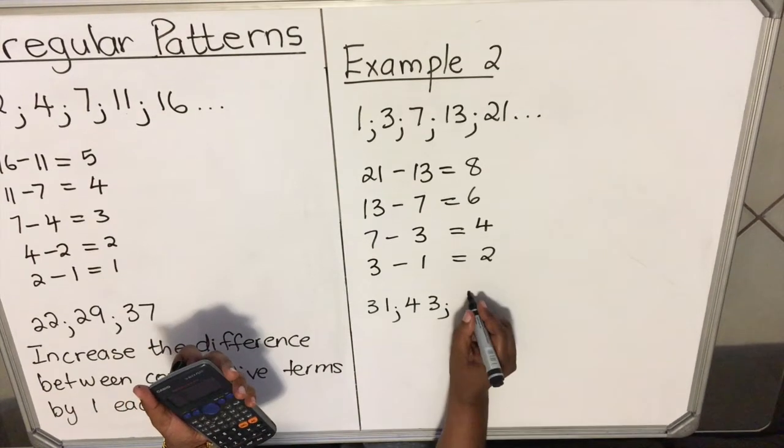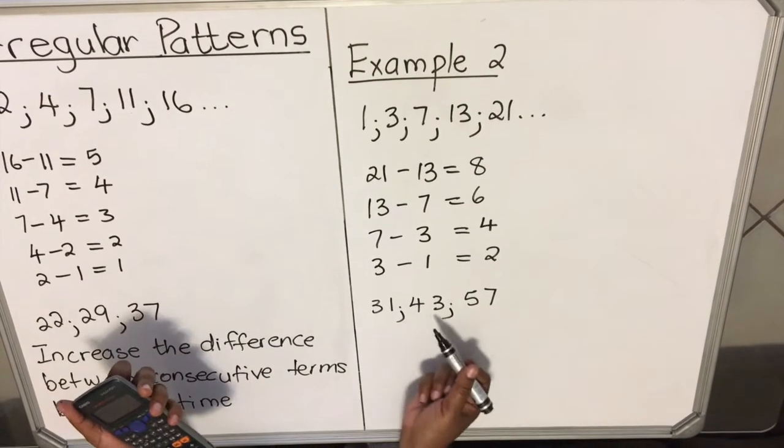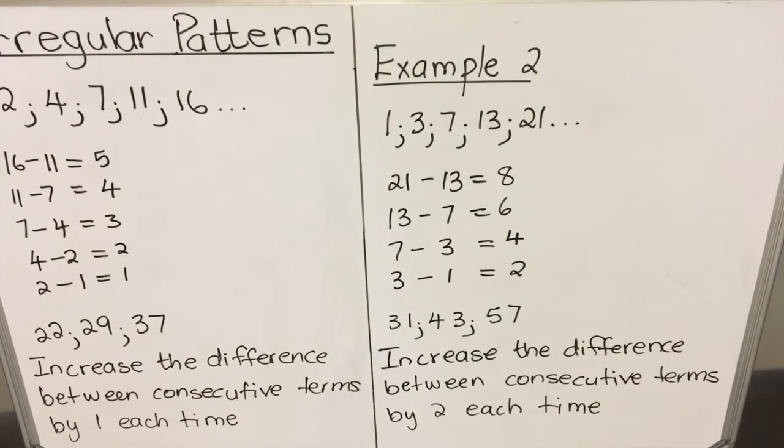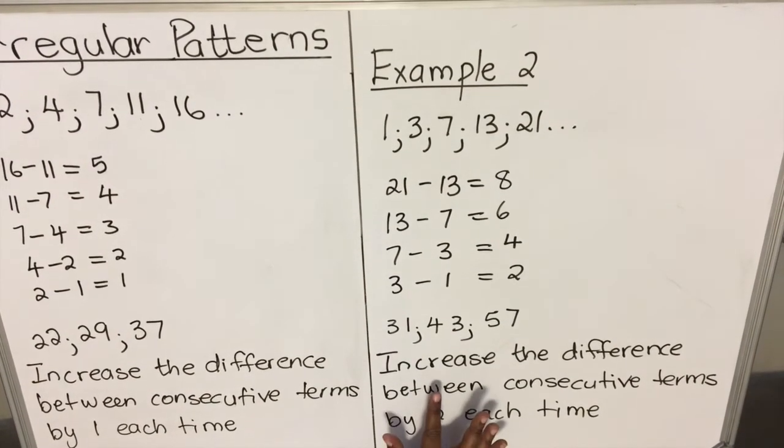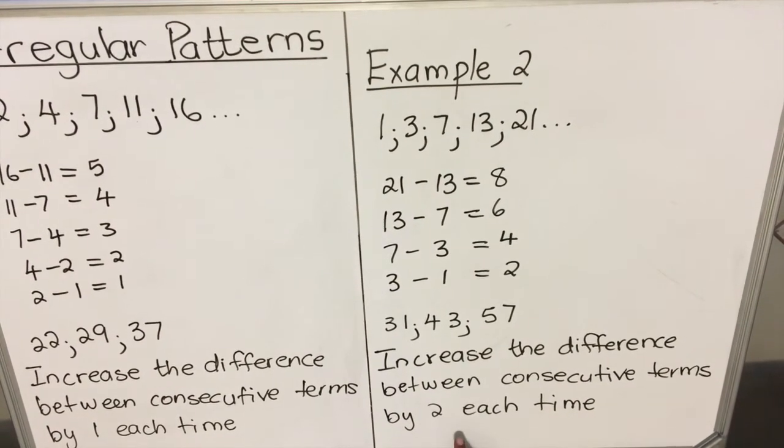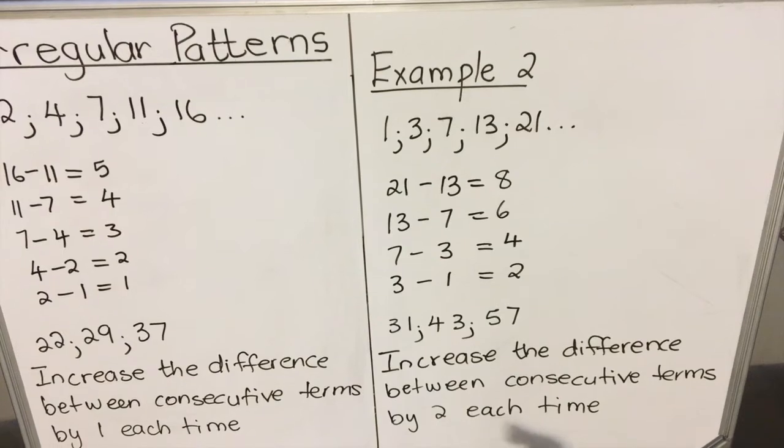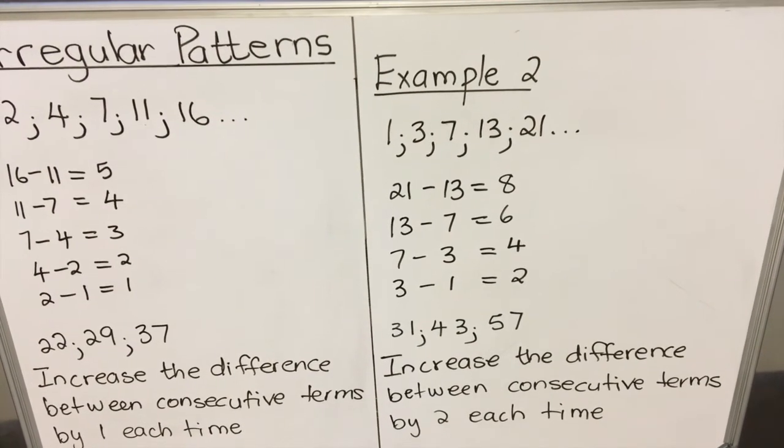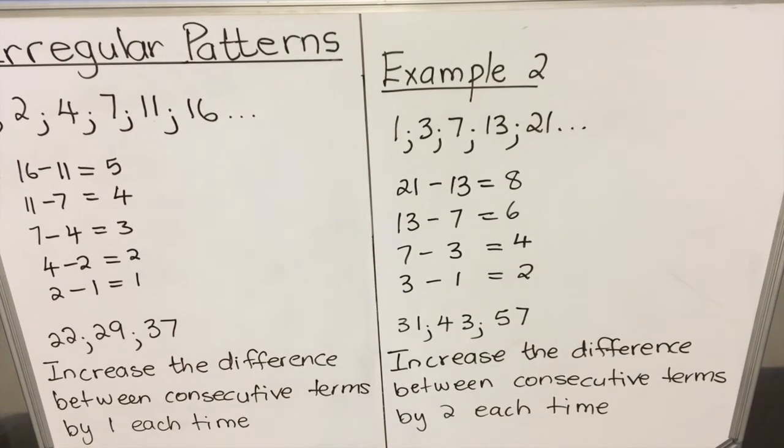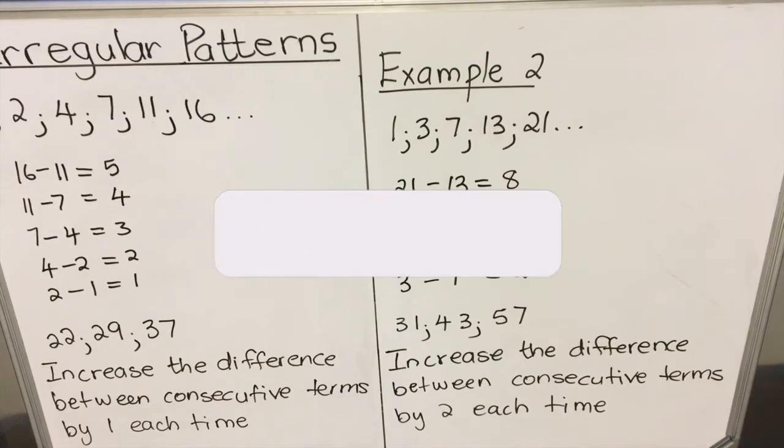Now let's do the rule. The rule in my own words is: increase the difference between consecutive terms by 2 each time. Remember, the difference was added by 2 each time. This section, you just need to practice and then need to look at that particular question specifically. There's no rule that fits everything, so you have to really look at that and try if it works.